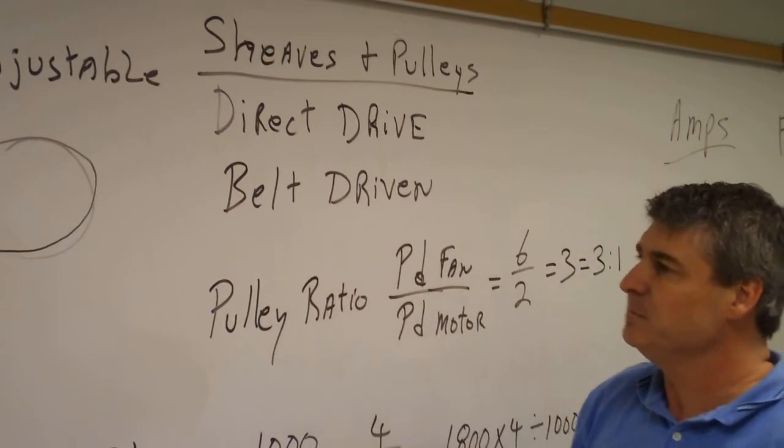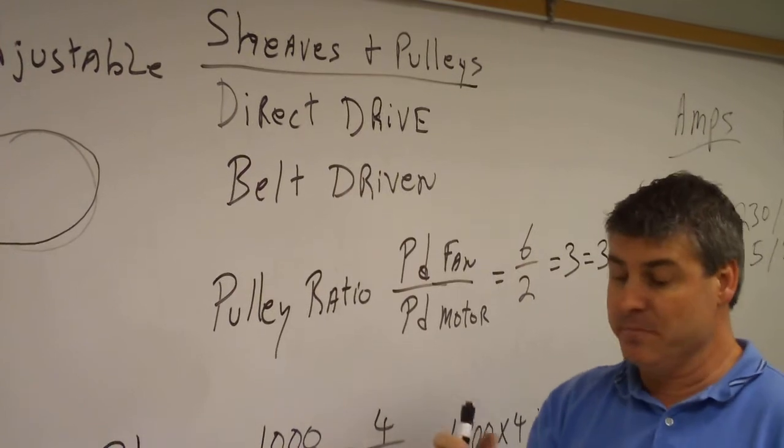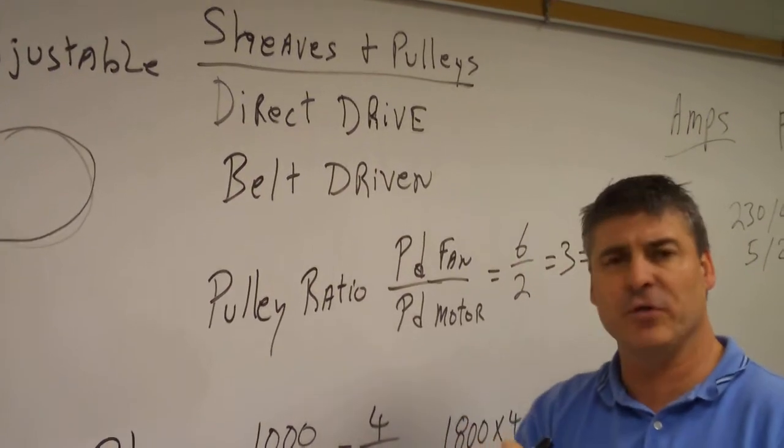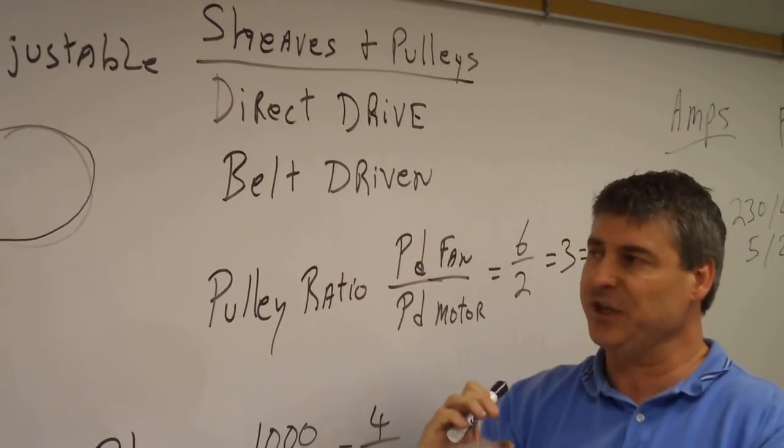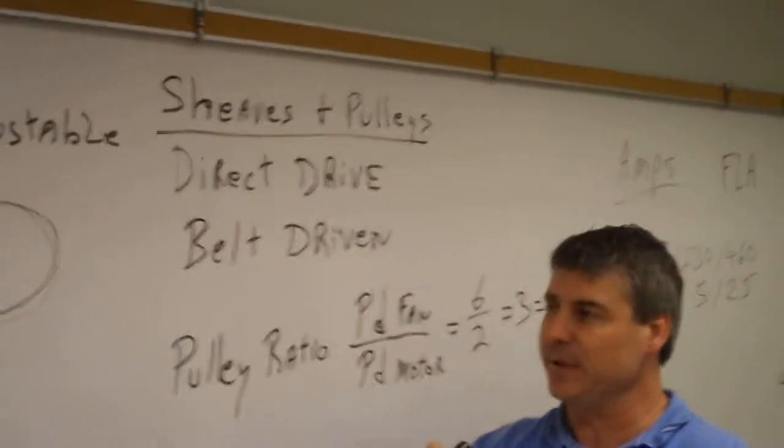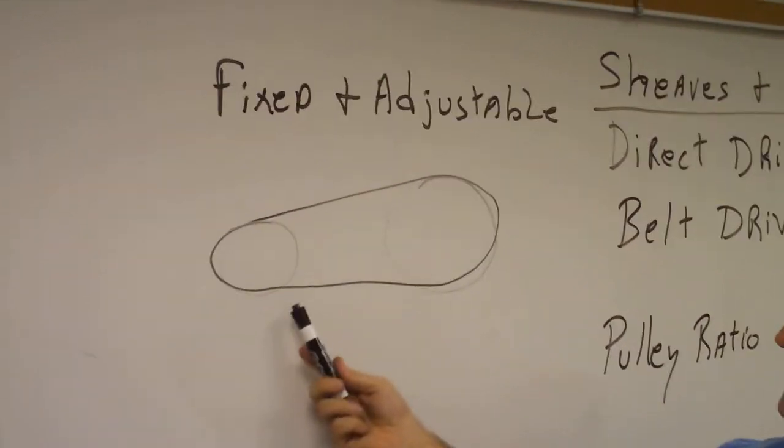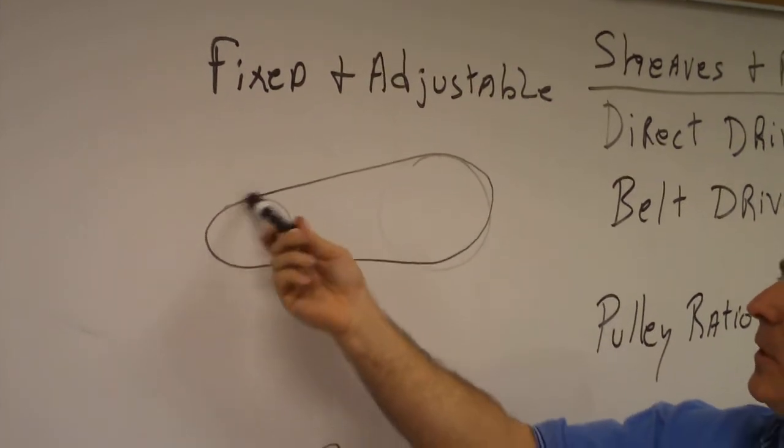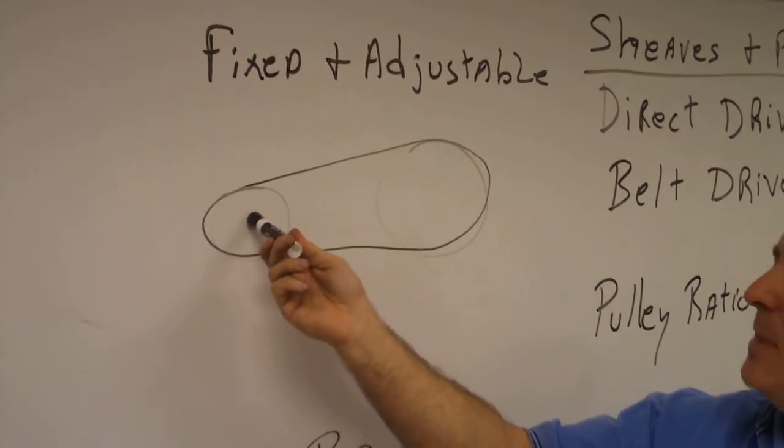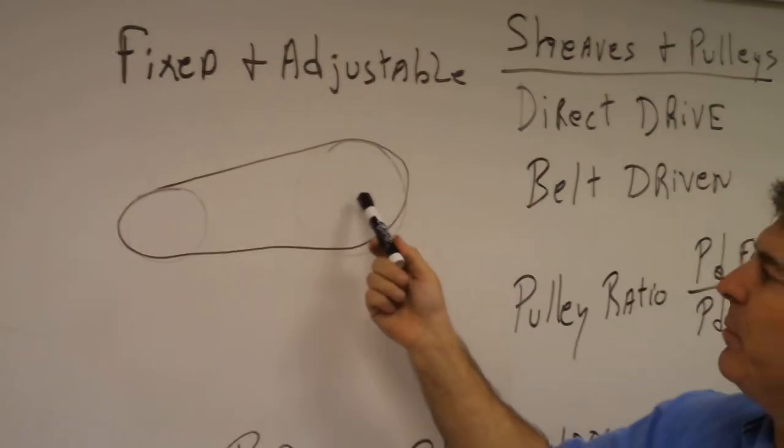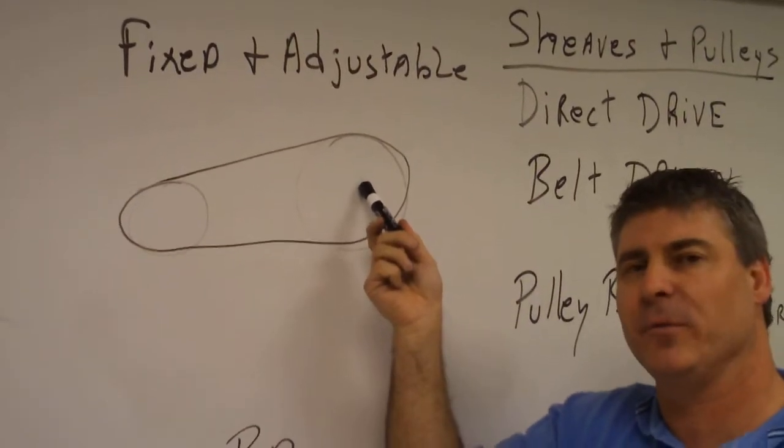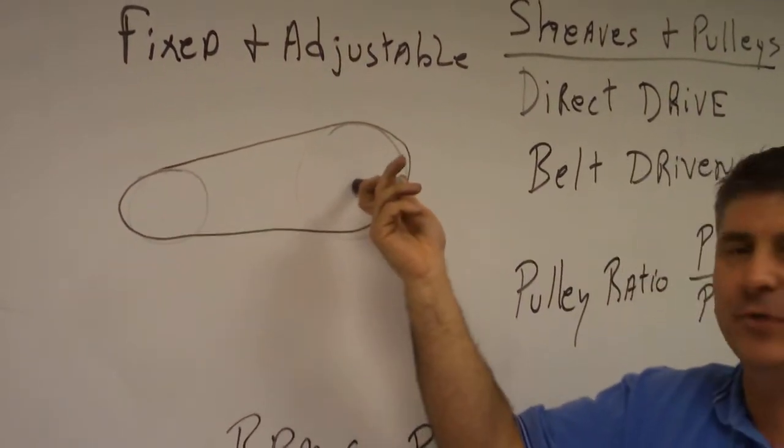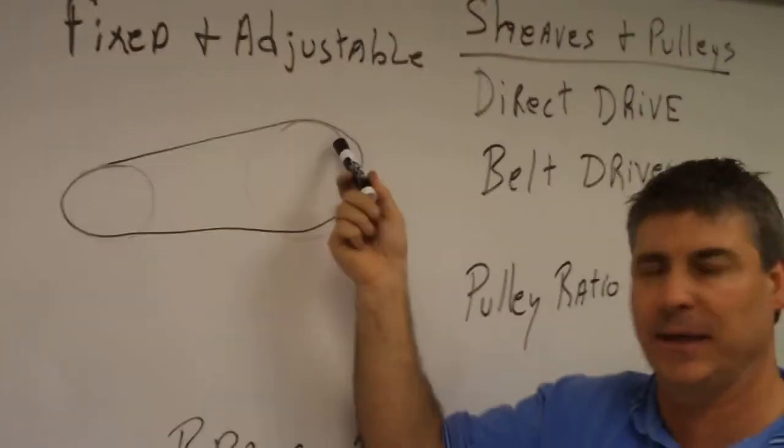In a belt driven system, you have the motor and a shaft on the motor with a pulley or a sheave attached to it. For instance, this is a schematic of maybe a sheave that's on a motor. Then you have your blower wheel that's completely separate from your motor. It has a shaft on it also, but it has a separate sheave or pulley.